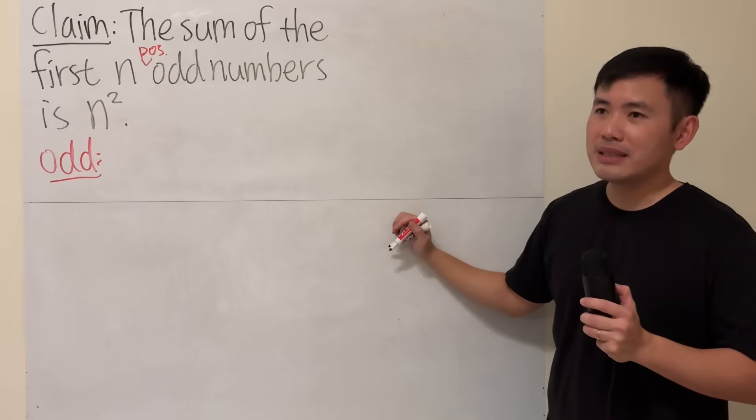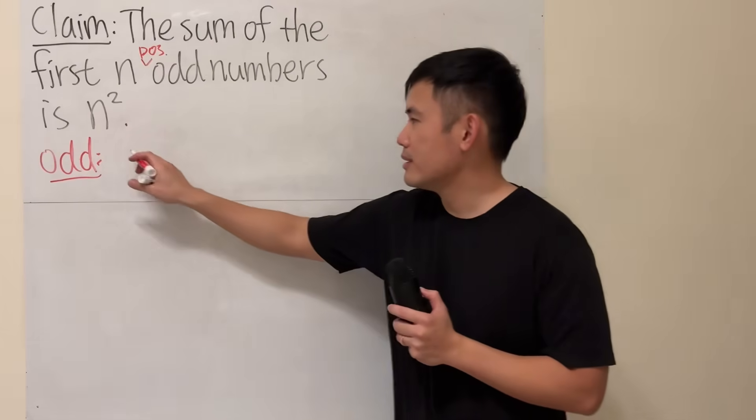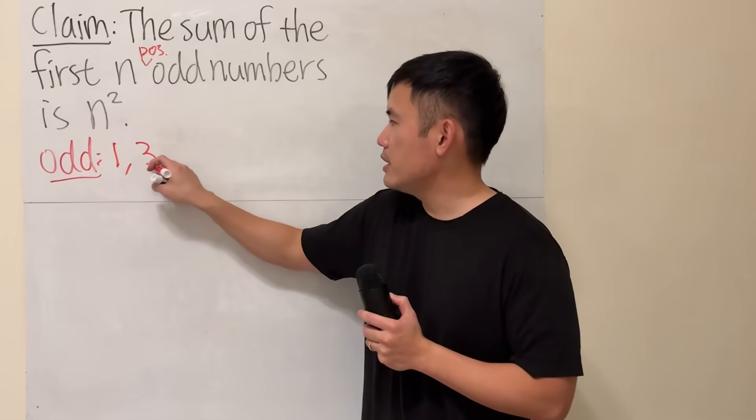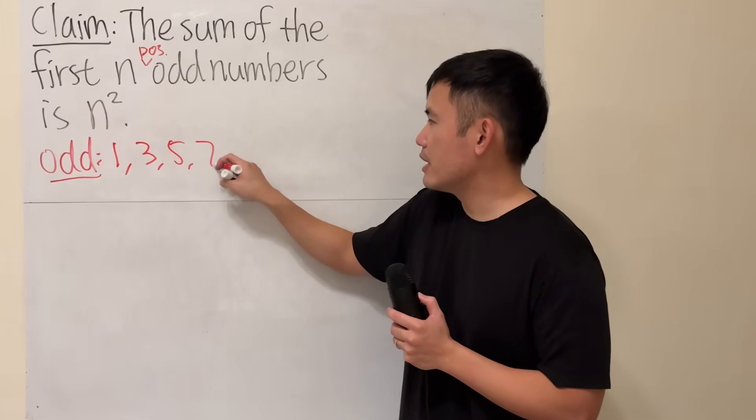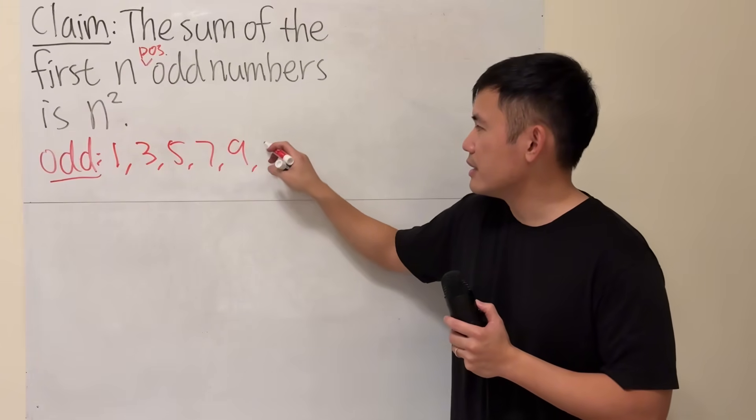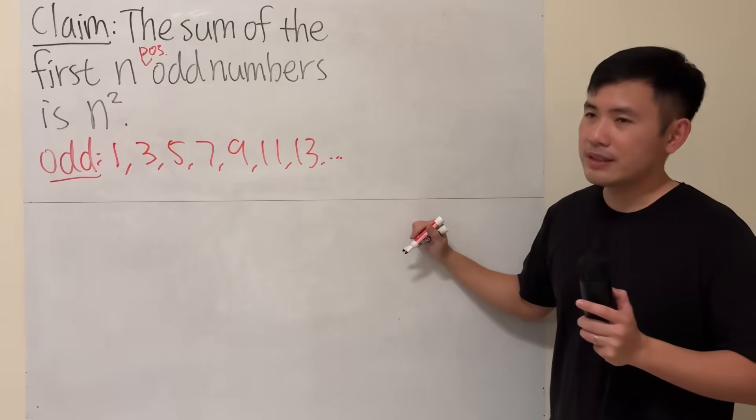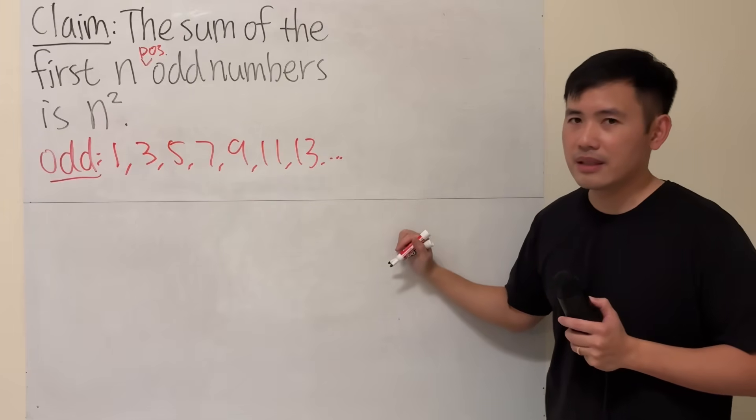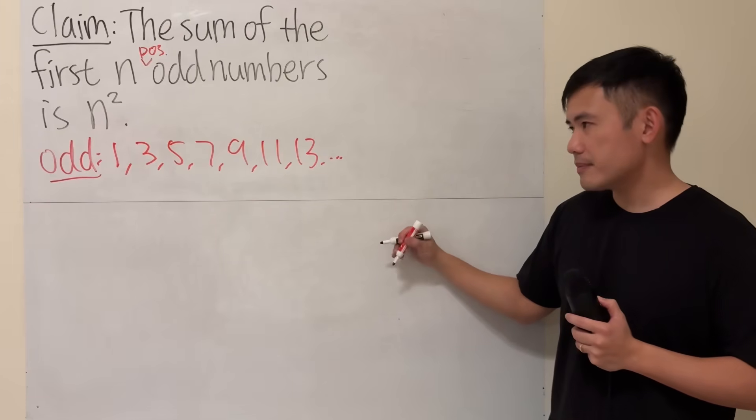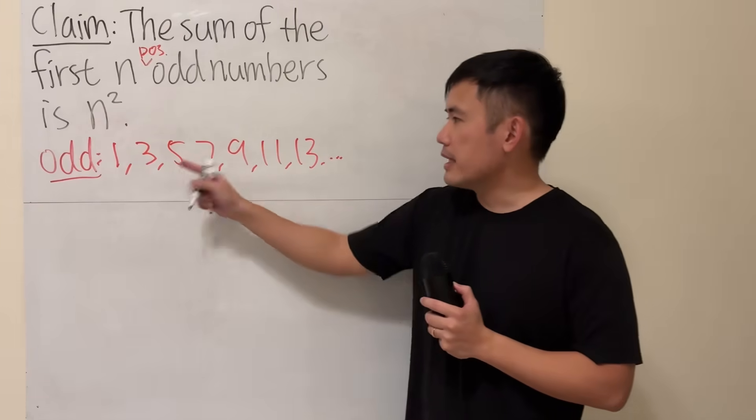Zero is not odd, zero is actually even. So we start with 1. And the next one is 3, and the next one is 5, and then 7, and then 9, and so on. So these are the odd numbers. Do not say 1.3 is odd. That's odd. Don't do that. So these are the odd numbers.